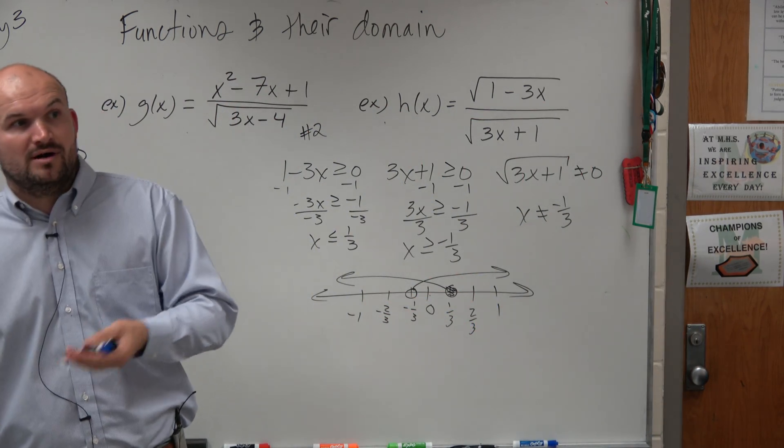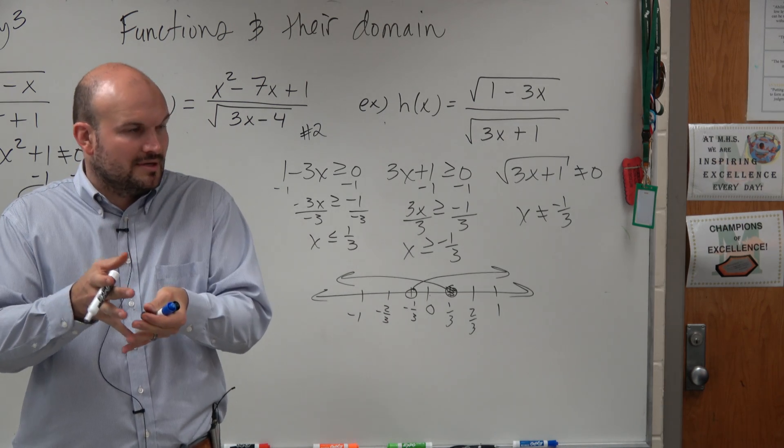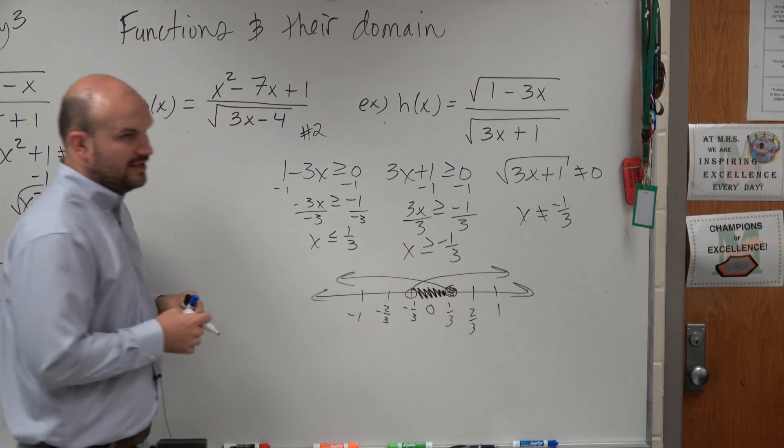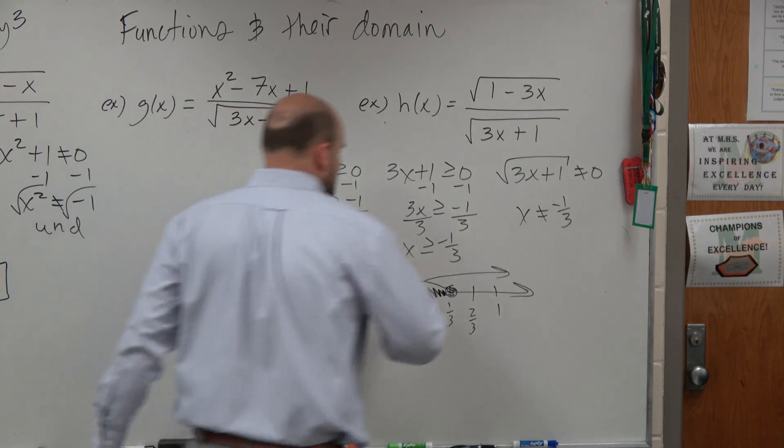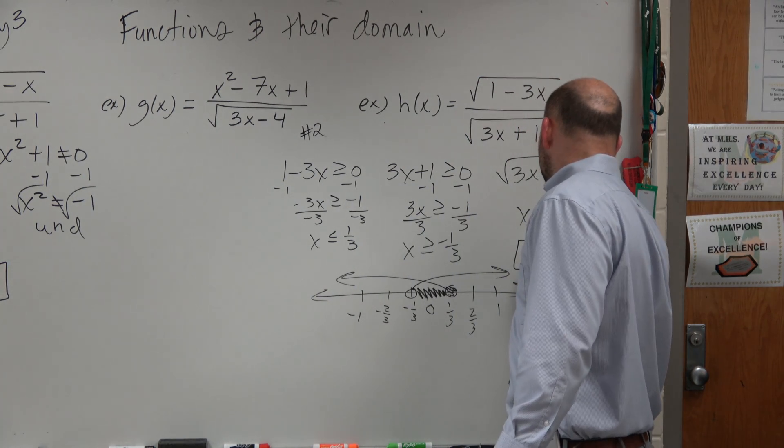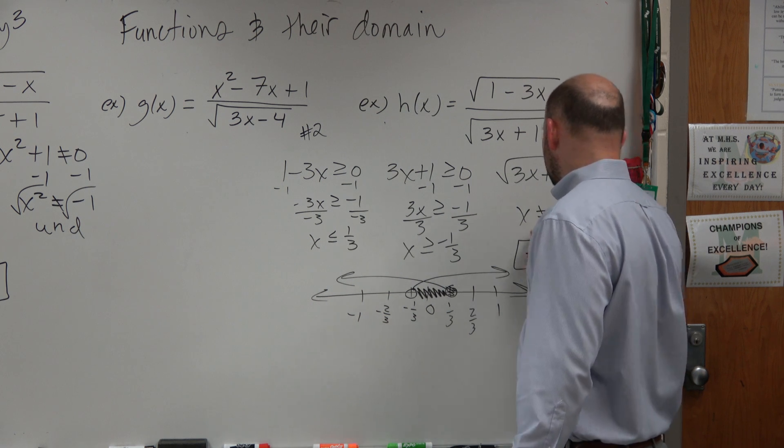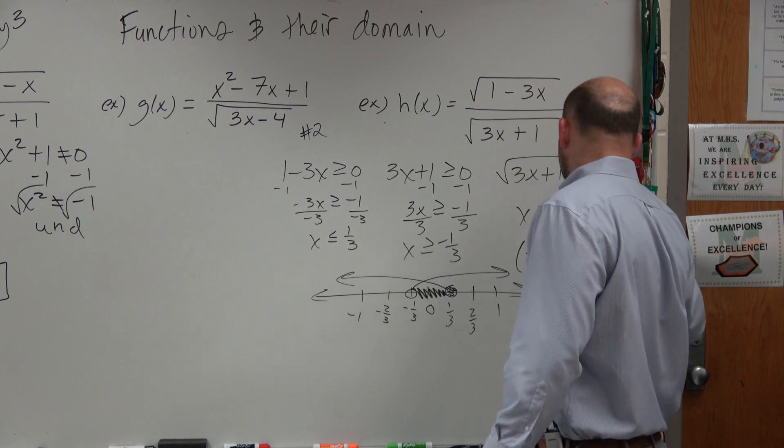You can't just say the domain works in 1, but it has to be true for both. So we're only going to shade between those. So my solution, or my domain, is going to be negative 1 third, comma, 1 third. Oops, sorry, that's enclosed, that's open, and that's closed.